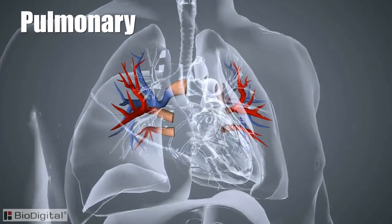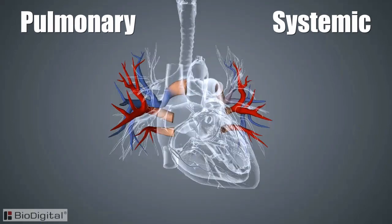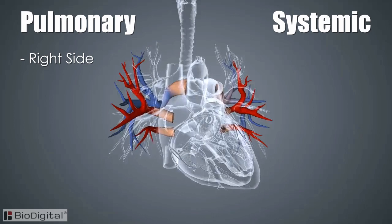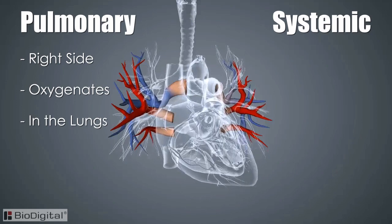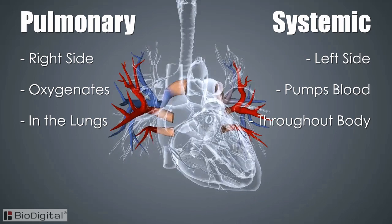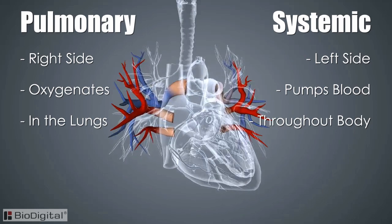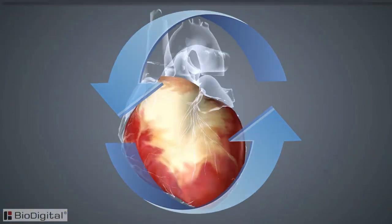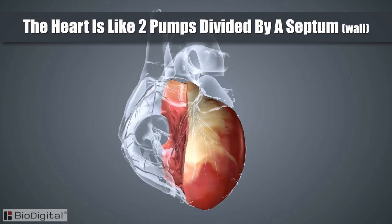These two pathways are the pulmonary pathway and the systemic pathway. In the human organism, the right side of the heart pushes the blood through the pulmonary circuit so that it can be oxygenated in the lungs. The left side of the heart pumps oxygenated blood to the entire body. The blood is then returned to the heart via the systemic pathway, where the cycle begins again. It can be said that the heart is actually two pumps divided by a septum, or wall.